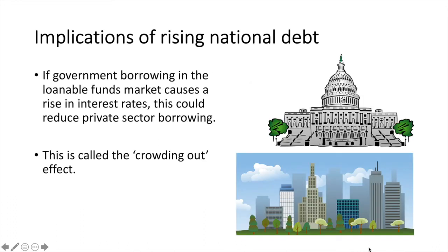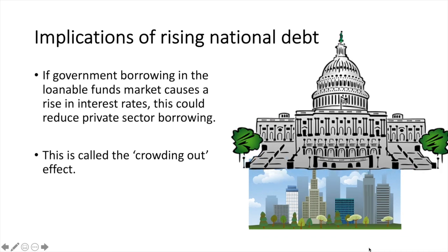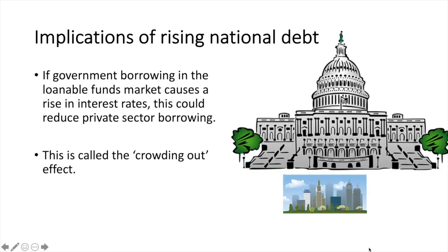If government borrowing in the loanable funds market causes a rise in interest rates, this could reduce private sector borrowing. This is called the crowding out effect.